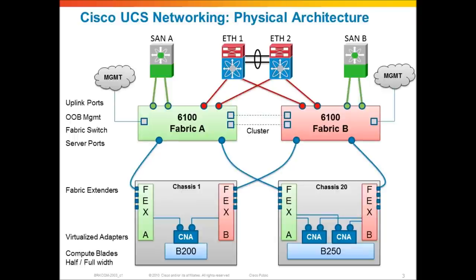The Fabric Interconnect also provides 10-gig or 1-gig connectivity to the upstream data center LAN, as well as fiber channel connectivity — 8 or 4-gig fiber channel — to your fiber channel SAN. To access UCS Manager and configure all of the elements in the system, you can do that through a single management interface on the Fabric Interconnect.